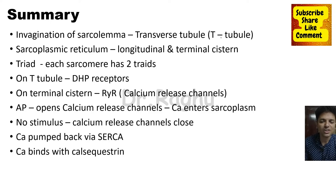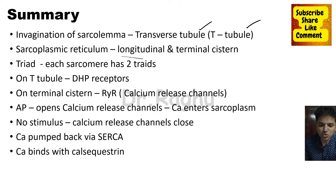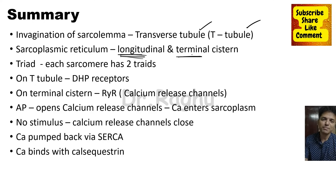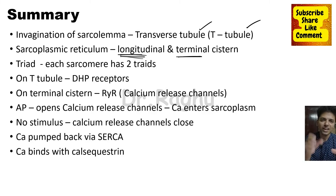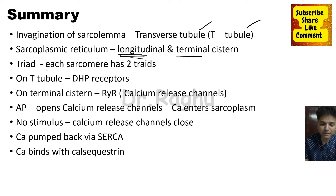To summarize: invagination of the sarcolemma is called the transverse tubule or T-tubule. The sarcoplasmic reticulum has two parts — the longitudinal part and the terminal cistern. The terminal cistern comes in close proximity to the T-tubule, with two terminal cisternae and one T-tubule forming a triad. Each sarcomere has two such triads in a skeletal muscle.